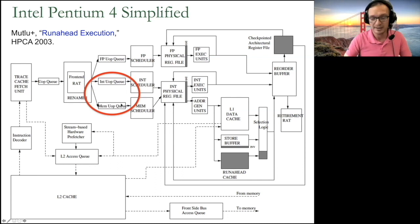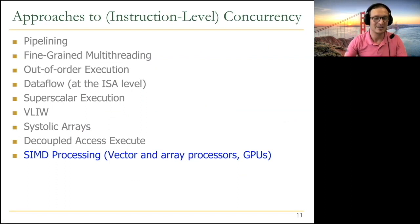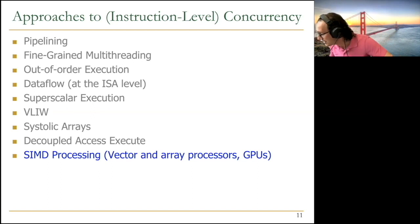That brings me to the end of decoupled access and execute. Hopefully you enjoyed the three major ideas that we discussed: VLIW, systolic arrays, and decoupled access and execute. You may think about where they could be useful going into the future as well. Let me see if there are any burning questions.